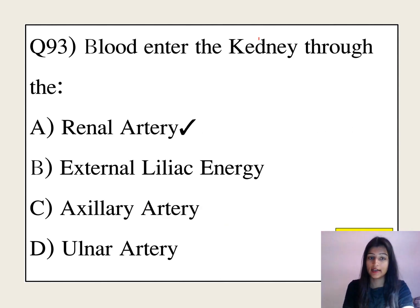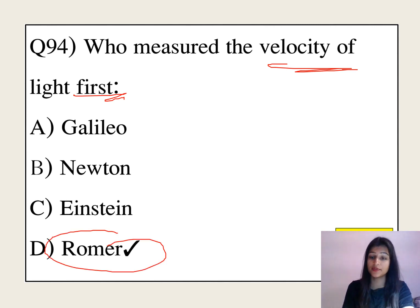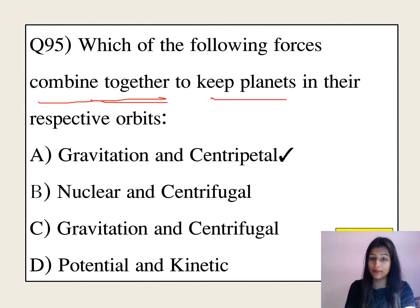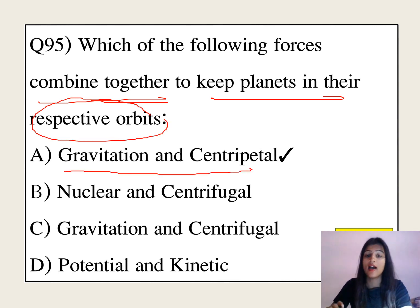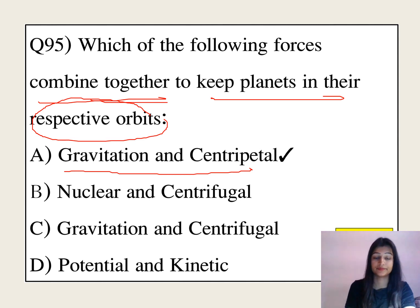Blood enters the kidney through the renal artery. Who first measured the velocity of light? The answer is Roemer — he was the first person to measure the velocity of light. Which forces combine to keep planets in their respective orbits? The answer is gravitational and centripetal forces.